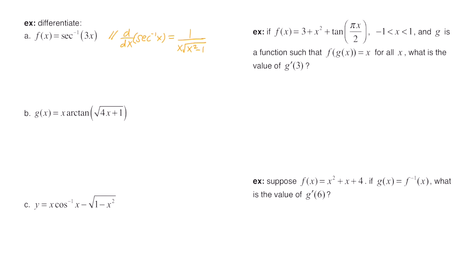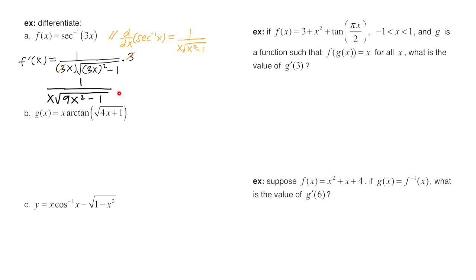This example says to differentiate f of x equals secant inverse of three x. The derivative of secant inverse of x is one over x times the square root of x squared minus one. We plug three x in wherever we have x: we get one over three x times the square root of three x quantity squared minus one. Because it's three x rather than just x, we apply the chain rule and multiply by the derivative of three x, which is three. The threes cancel, and our final answer is one over x times the square root of nine x squared minus one.